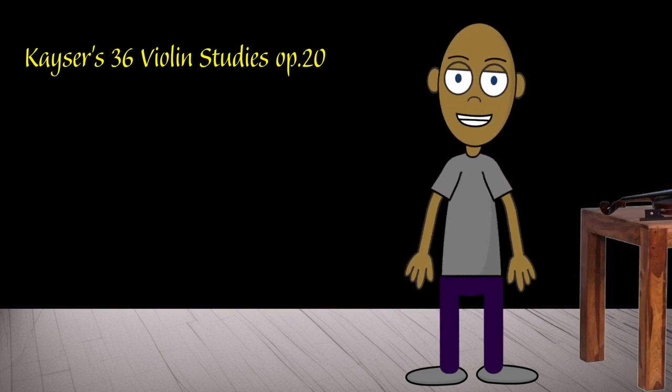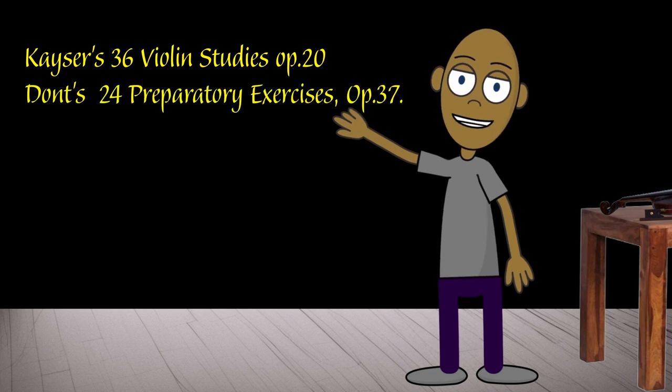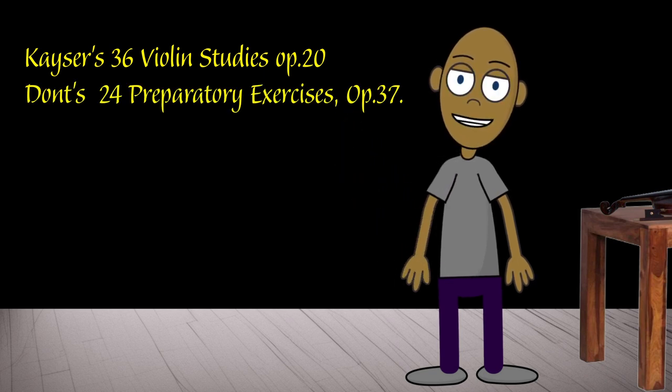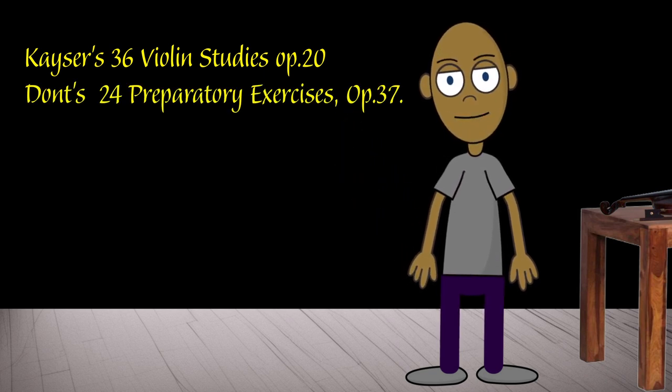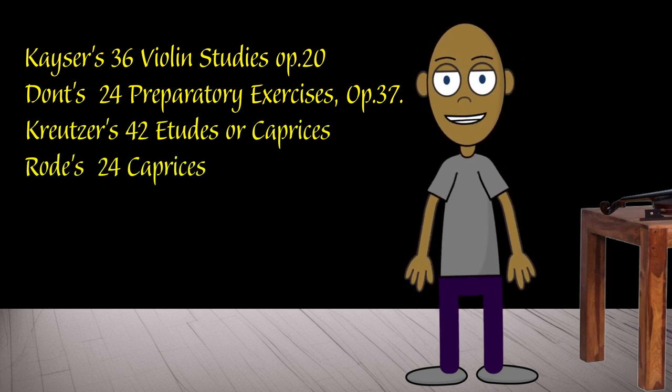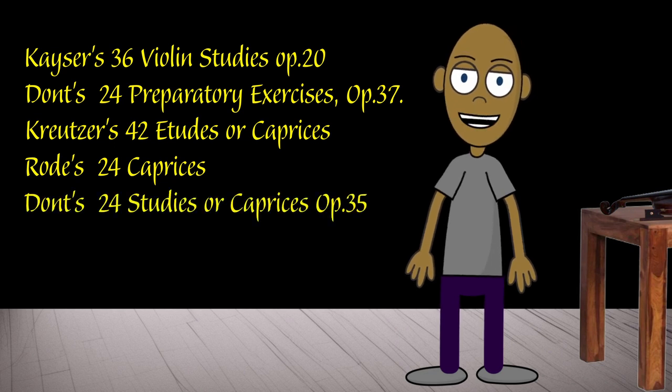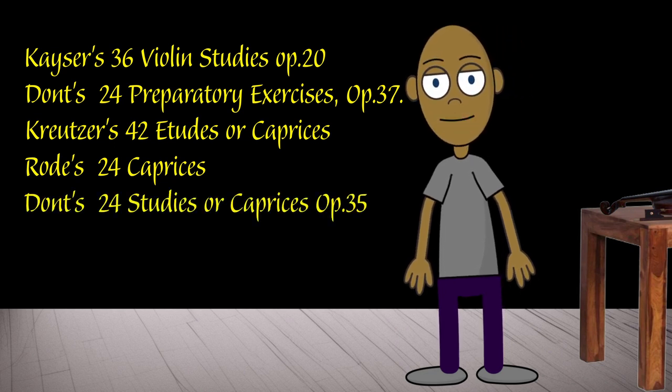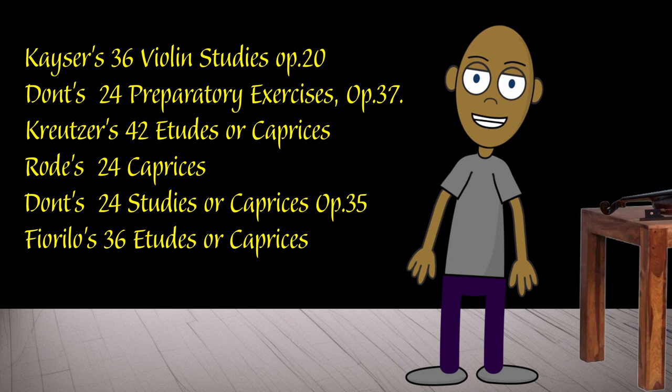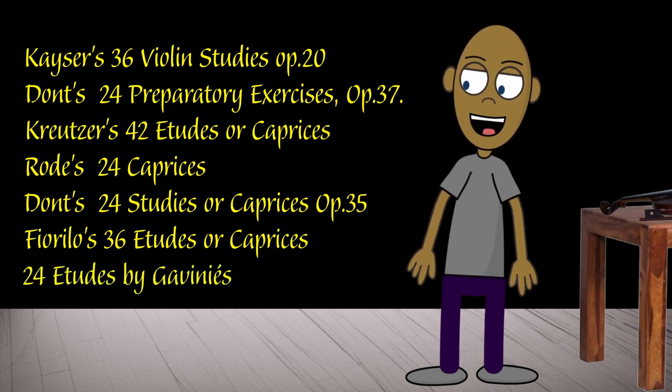So, I start my list with Kaiser's 36 Violin Studies, Op. 20, and then continue with Dont's 24 Preparatory Exercises, Op. 37, then Kreutzer's 42 Etudes, or Caprices, followed by Rode's 24 Caprices, then Dont's 24 Studies, or Caprices, Op. 35, Fiorillo's 36 Etudes, or Caprices, and ending with the 24 Etudes by Gaviniès.